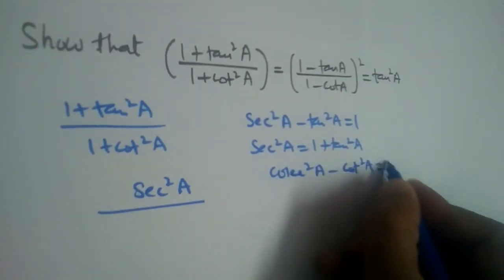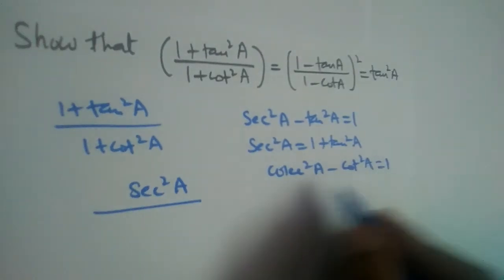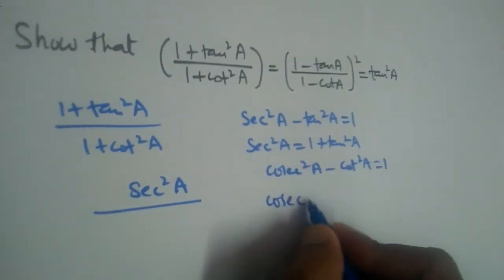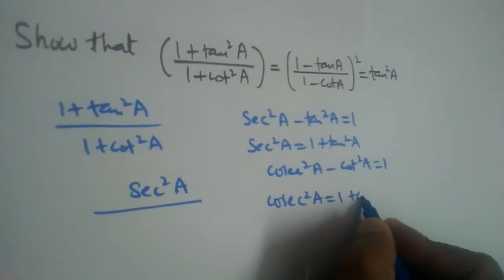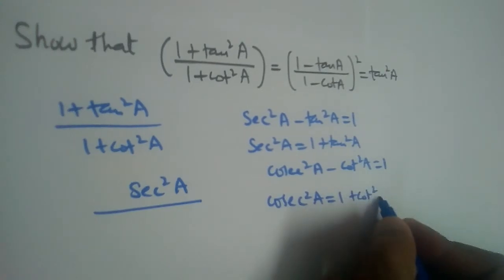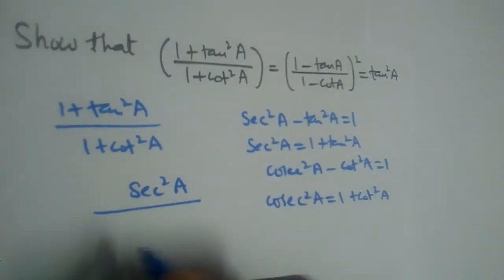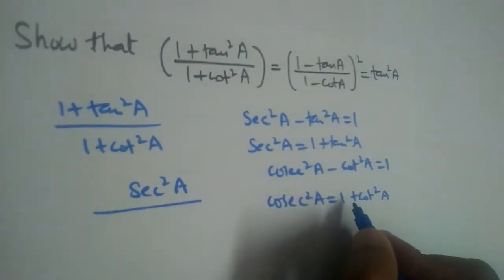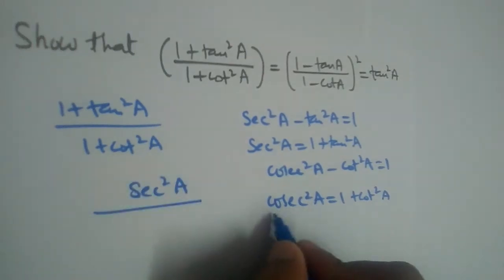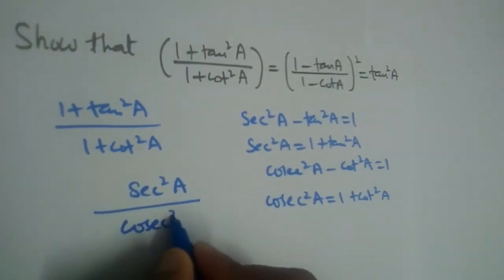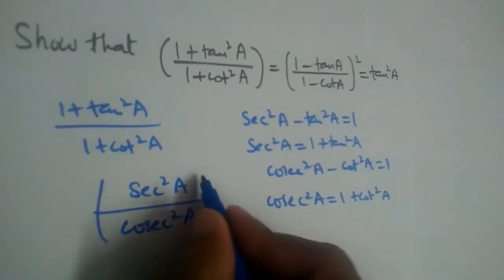If cot goes to the other side, cosec²a = 1 + cot²a. So in place of 1 + cot²a, we can write cosec²a in the denominator.